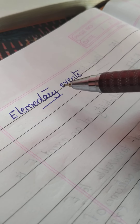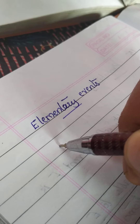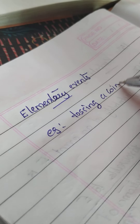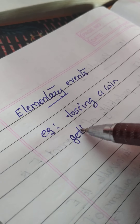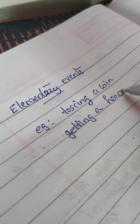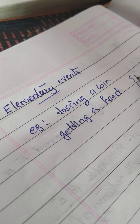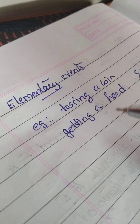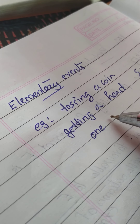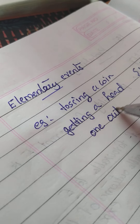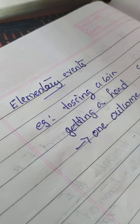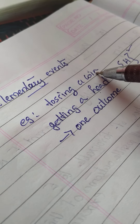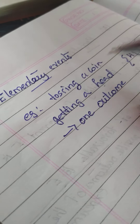Today we will start with elementary events. Consider the example of tossing a coin. If I am taking the event as getting a head, there will be only one outcome — H. This type of event is called an elementary event. An elementary event means an event having only one outcome. So in this case, getting a head while tossing a coin is an elementary event.